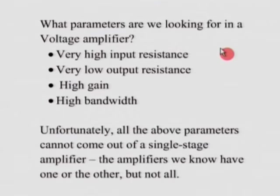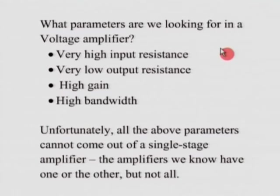We also saw that a voltage amplifier must have very low output resistance. This is because the voltage amplifier is a voltage controlled voltage source. In the Thevenin representation, we have an open circuit voltage in series with a resistance. Any current flowing into the load has to flow through this series resistance, so if we do not have low output resistance, a lot of voltage will drop across it and the load will not get the full amplified output. Therefore, in a voltage amplifier, we must have very high input resistance, very low output resistance, high gain, and high bandwidth.